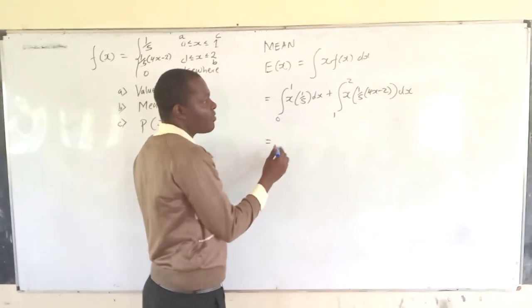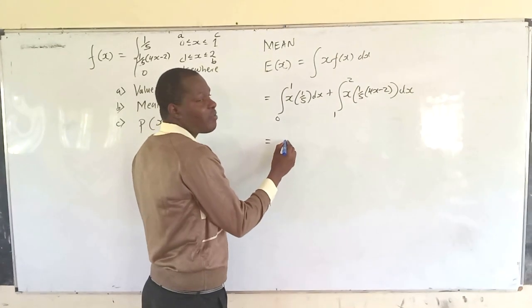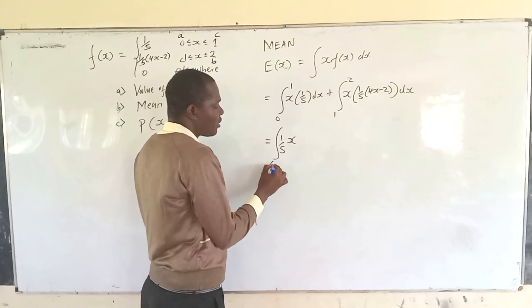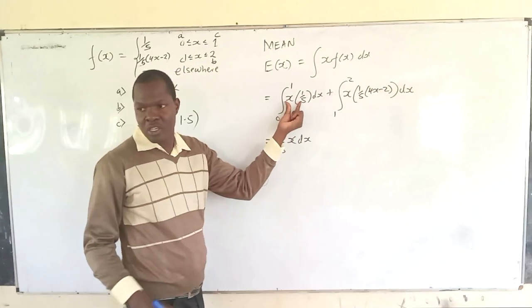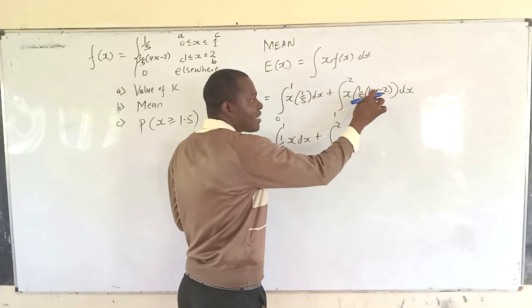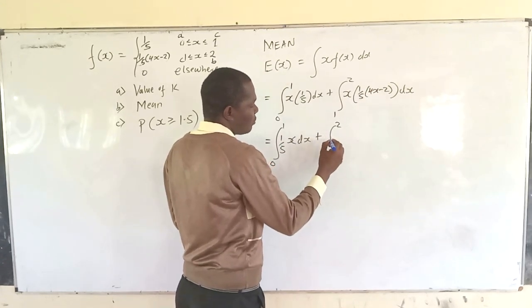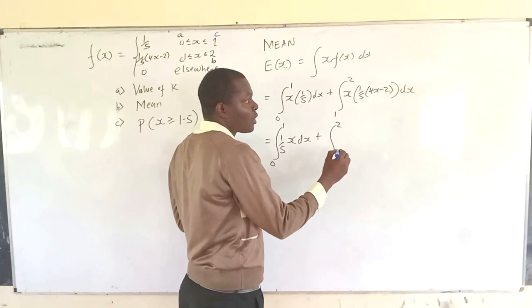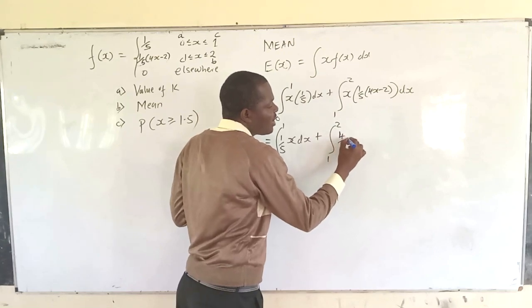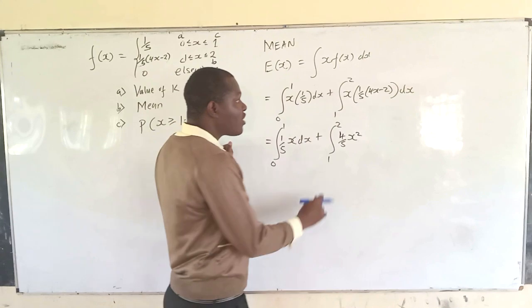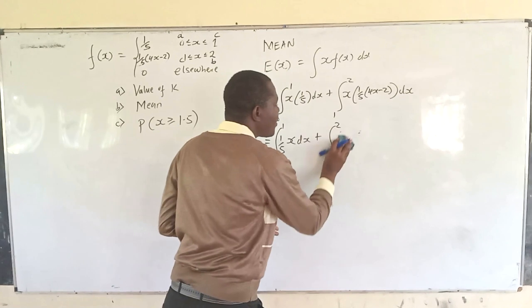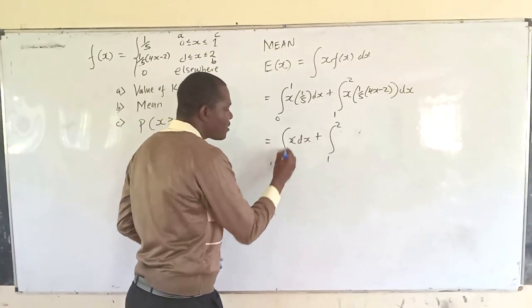For the first integral, 1/5 is a constant so it factors outside, giving (1/5) times x. For the second integral, factorize 1/5 outside. Then x times 4x gives 4x squared, and x times negative 2 gives negative 2x. So the second integrand is (1/5)(4x squared minus 2x) from 1 to 2.